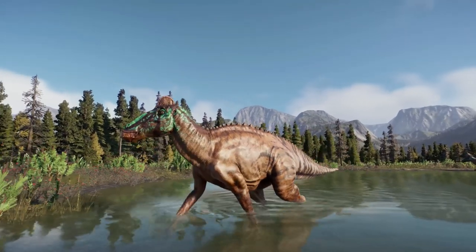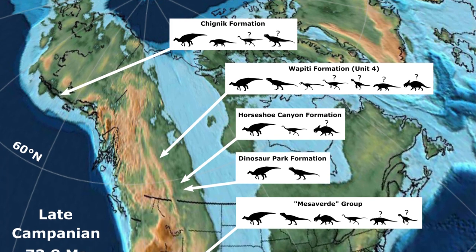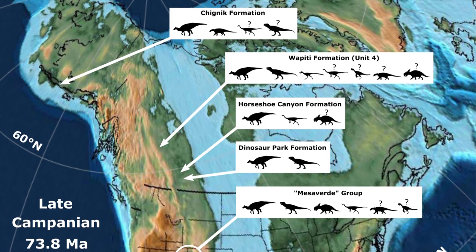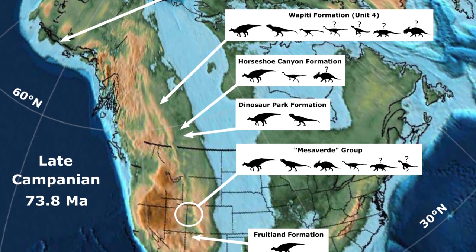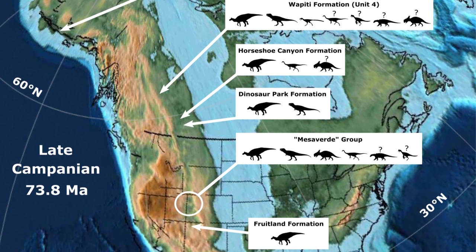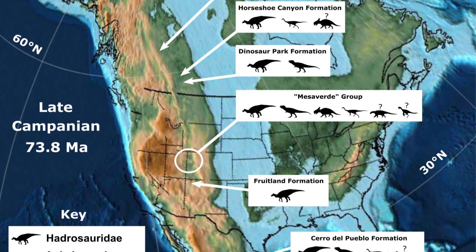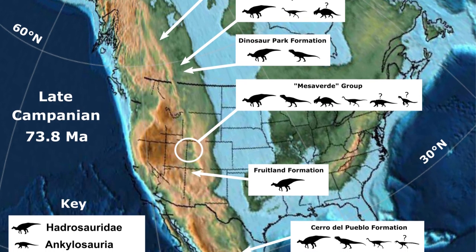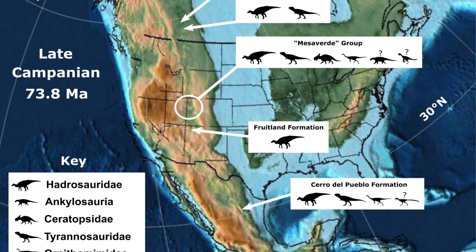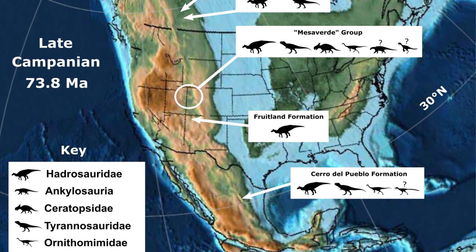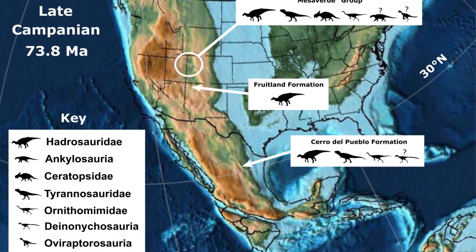It is also believed that Richardoestesia-like teeth have been found in many late Cretaceous geological formations, including the Wapiti Formation, Horseshoe Canyon Formation, the Scollard Formation, Hell Creek Formation, Ferris Formation, and the Lance Formation, dated to about 66 million years ago.